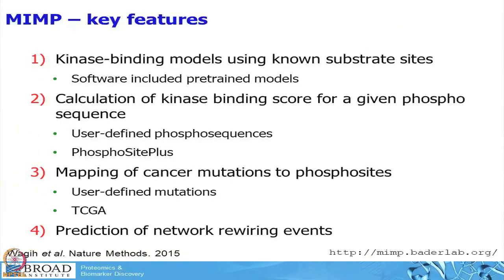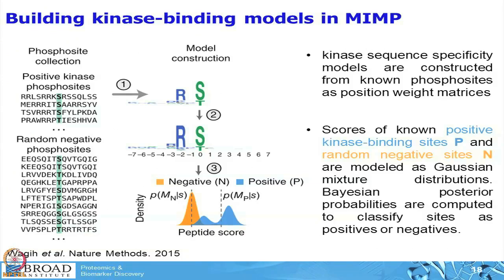We are going to go quickly through the different steps here. The idea is to understand the principle of how it works, so not understanding all the details is not crucial for our hands-on session. This is very similar to what we have just looked at. You have two sets of phosphosite collections: one is all positive kinase phosphosites — these are known substrates — and then to get a background dataset or negative distribution, you choose random negative phosphosites. You construct your model and use a Bayesian approach to determine whether your phosphosite of interest comes from a negative or positive distribution. This is related to the mixture modeling discussed yesterday.